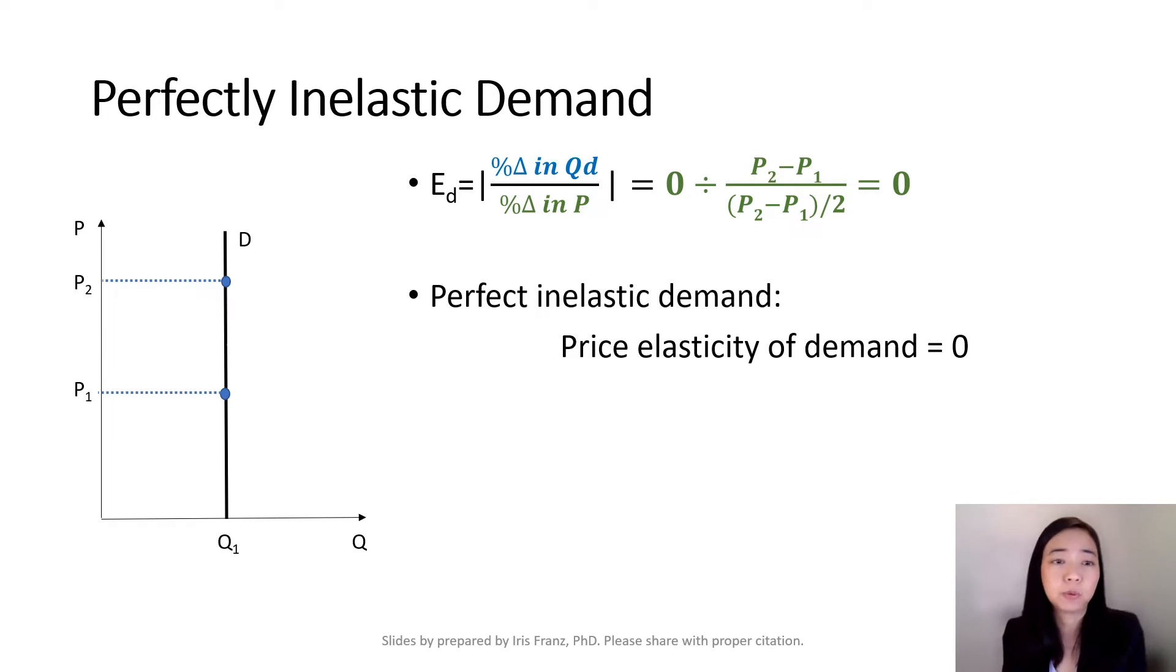And here on the slide, we can see that the price goes up from P1 to P2. But your quantity demanded didn't change. It remains at Q1. So percentage change in quantity demanded is 0. 0 divided by a positive number is equal to 0.